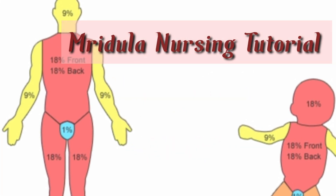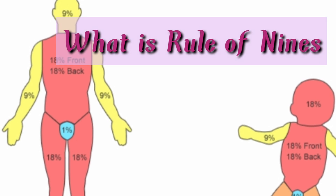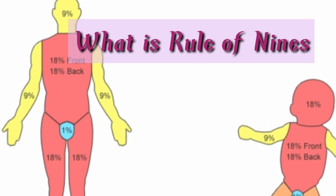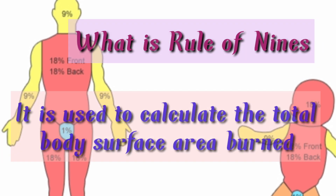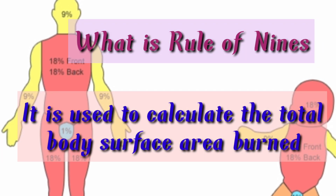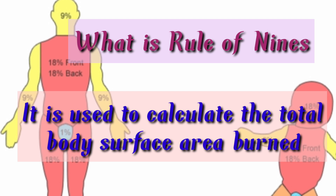Let's see what is rule of 9's. Rule of 9 is used to calculate the total body surface area which is burned. That means we can calculate and identify how much body surface area is burned. The percentage of burns we can identify through this rule of 9.